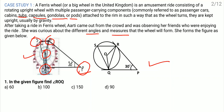First question: in the given figure, find angle ROQ. We know the first theorem of circles — radius is perpendicular to the tangent. So at this place, this is the radius and this one is the tangent, making this angle 90 degrees. Here OR is the radius and this one is the tangent, so this angle is also 90 degrees. That means in quadrilateral OQPR, these two angles are 90 and 90.